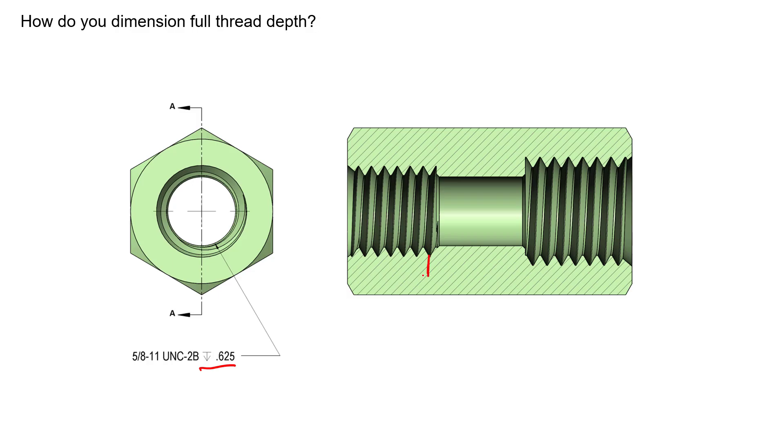At this point when we say a depth of 0.625, it's saying you have to have a full thread at or beyond 0.625. So that means you could have full threads that continue on to this depth, but all I care about is at 0.625 I have full threads to work with. I have a full thread depth up to at least 0.625.